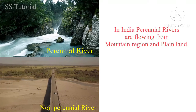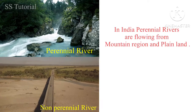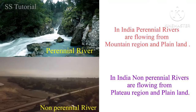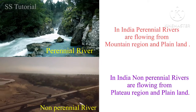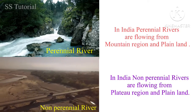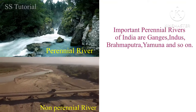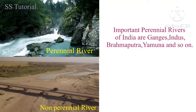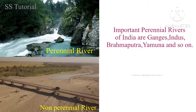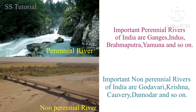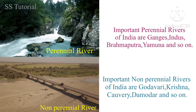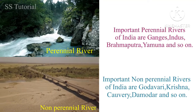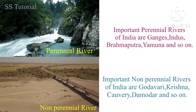In India, perennial rivers flow from mountain regions and plain land, whereas non-perennial rivers flow from plateaus and plain land. Some important perennial rivers of India are the Ganges, Indus, Brahmaputra, Yamuna, and so on. Some important non-perennial rivers of India are the Godavari, Kaveri, Krishna, Damodar, and so on. Hope all the differences are clear to you.